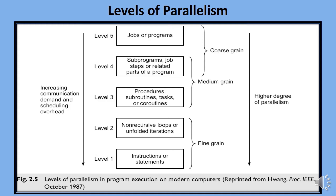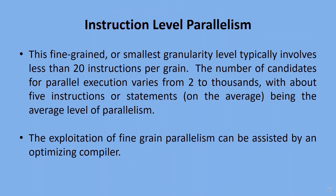Instruction Level Parallelism: if a grain contains less than 20 instructions, it is called Fine Grain. Fine Grain Parallelism can involve anywhere from 2 to 1000 candidate instructions. The exploitation of Fine Grain Parallelism can be assisted by an optimizing compiler, which should automatically detect parallelism and translate the source code to parallel form.